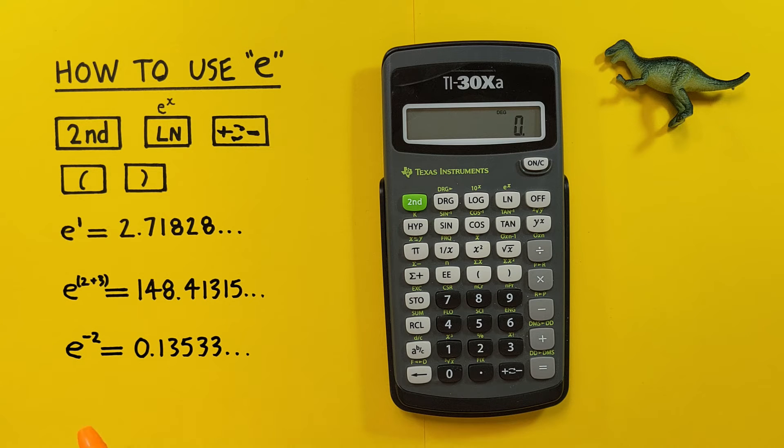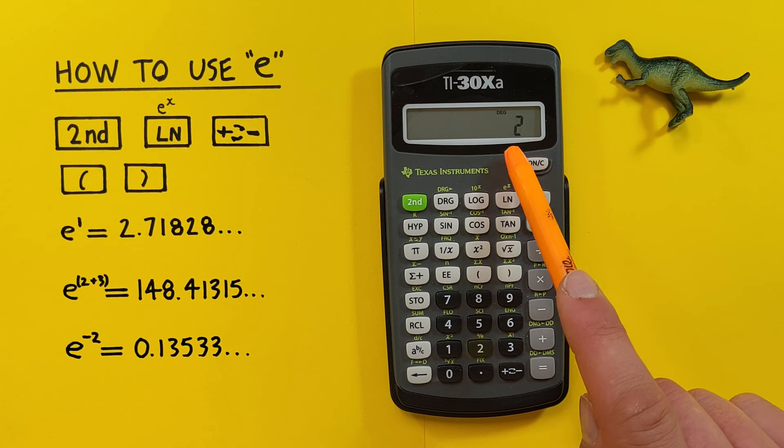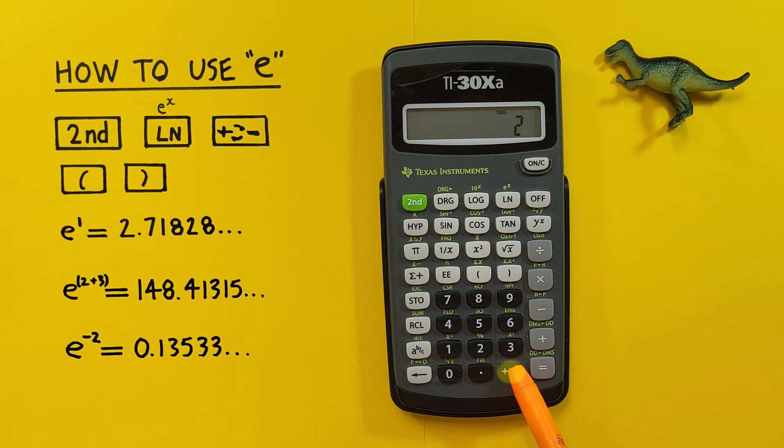We can also get e to a negative power or exponent. To do this we need to use the positive negative key. Again we start by entering our exponent on the screen, so 2, and then to change this to a negative we hit the positive negative key.